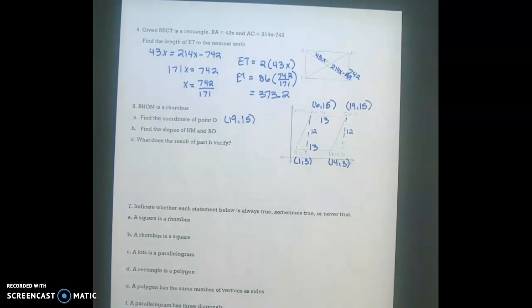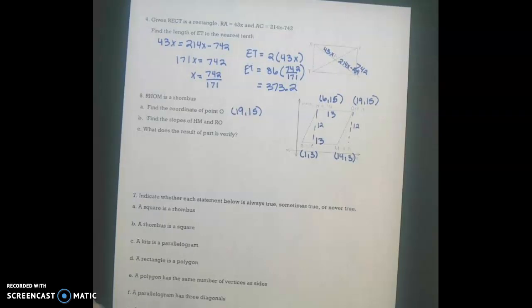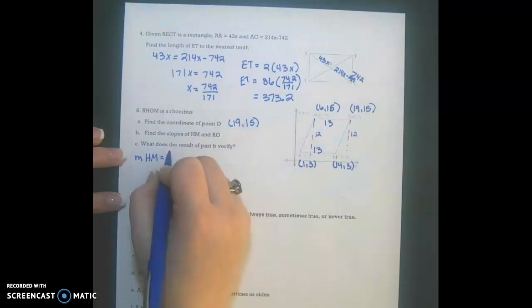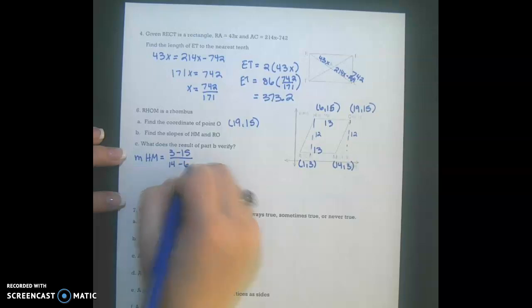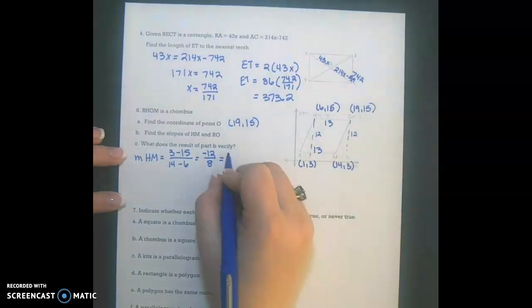And now it wants me to find the slopes of HM and RO. So those would be my diagonals here. So our slope of HM would be 3 minus 15 over 14 minus 6. And this gives us negative 12 over 8, which reduces to negative 3 over 2.